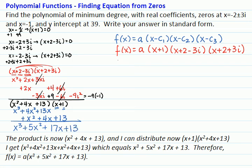This adds to x cubed plus 5x squared plus 17x plus 13. And that makes the factorization of f of x equal to a times x cubed plus 5x squared plus 17x plus 13.